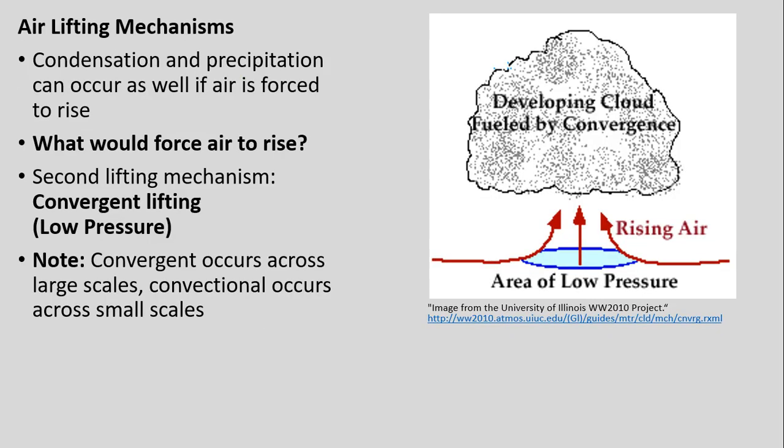Another example: condensation and precipitation can occur if air is forced to rise. One mechanism we've already talked about is convergent lifting, or our low pressure systems. It's important to keep that distinct from convection. Convergent lifting associated with low pressure usually occurs over relatively large scales — hundreds to thousands of kilometers. Convection, by contrast, operates at much more localized scales, typically within a few miles to tens of kilometers.